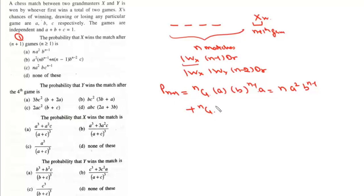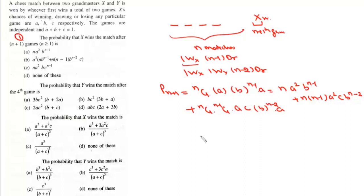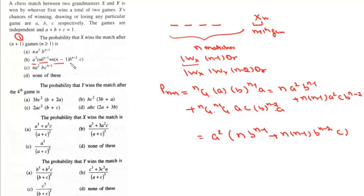For the second case: one win for X (nC1), one win for Y (n-1 C1), with n-2 draws giving b^(n-2), and the (n+1)th game won by X. This gives n·(n-1)·a²·c·b^(n-2). Taking a² common, P_{n+1} = a² · [n·b^(n-1) + n(n-1)·b^(n-2)·c], which is option B.